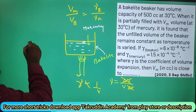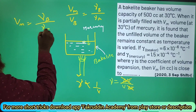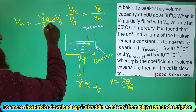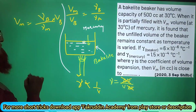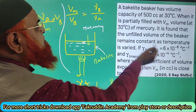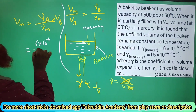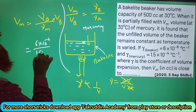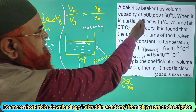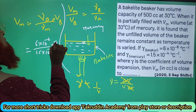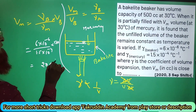Therefore, volume of mercury = (γ_B / γ_M) × volume of bakelite. Gamma of bakelite is 6×10⁻⁶, gamma of mercury is 1.5×10⁻⁴, and the beaker capacity is 500. Solving this gives 20 cm³, or 20 cc.